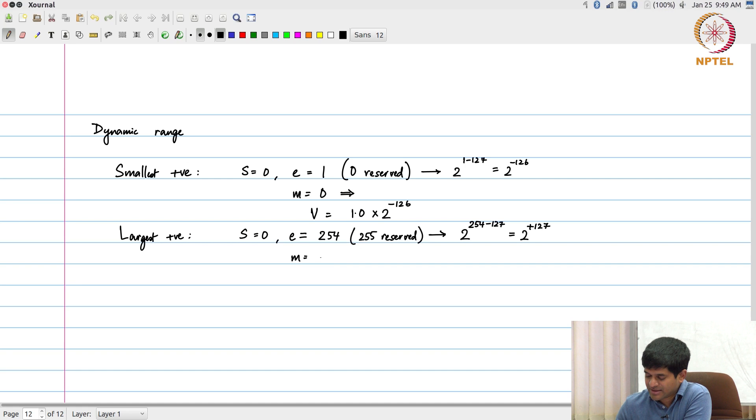And the mantissa in this case is all 1s, which basically corresponds to a value of 1.999 something times 2 to the power plus 127.